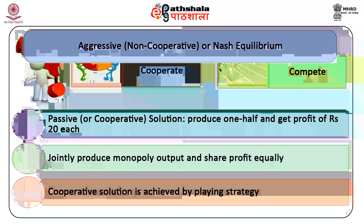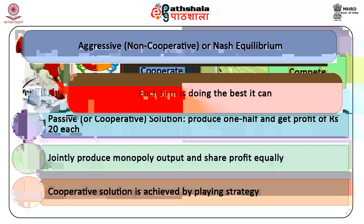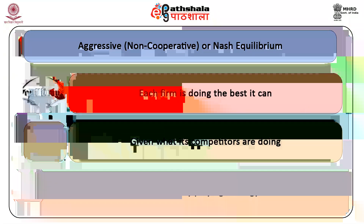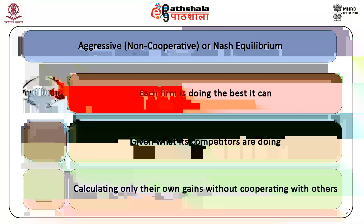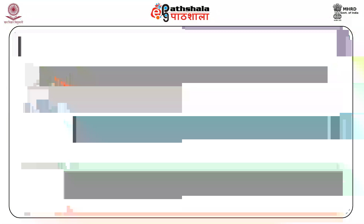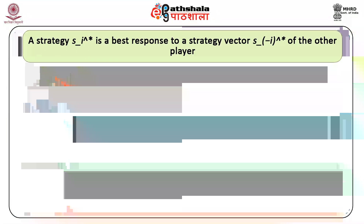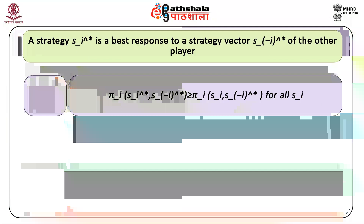The cooperative solution is achieved when both firms produce one-half of the monopoly output, jointly producing the monopoly output and sharing profit equally, earning Rs 20 each. The Nash equilibrium is the equilibrium where each firm is doing the best it can given what its competitors are doing, and each firm proceeds by calculating only its own gains without cooperating with others. Formally, a strategy S*i is a best response to a strategy vector S* minus i of the other player if the payoff function pi_i(S*i, S*-i) is greater than or equal to pi_i(S_i, S*-i) for all S_i.